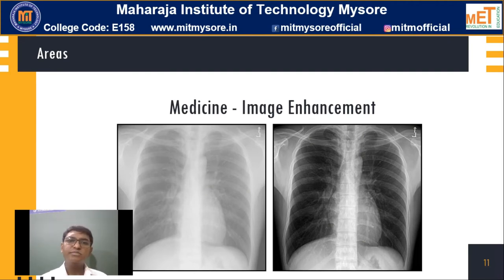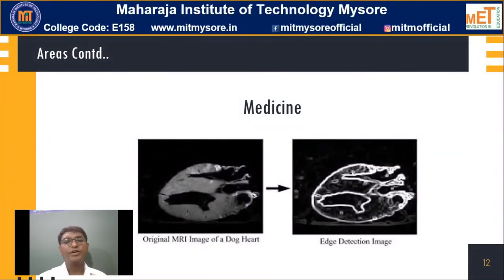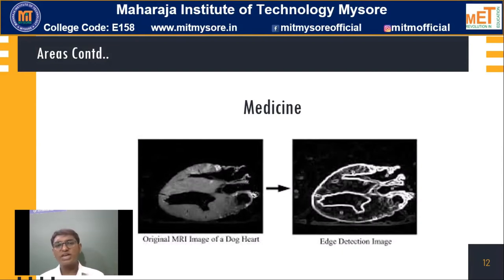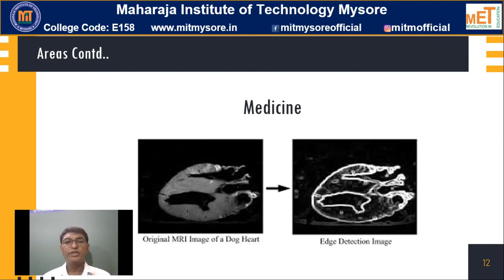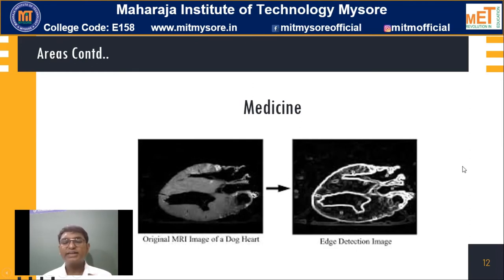Not only in humans, image processing is being used in animals as well. You are able to see the original MRI image of a dog's heart. If you want to know the shape of a dog's heart, you need to apply object detection technique, where you will observe the shape of the heart very much clearly. You can tell that this is the shape of the heart of a dog.